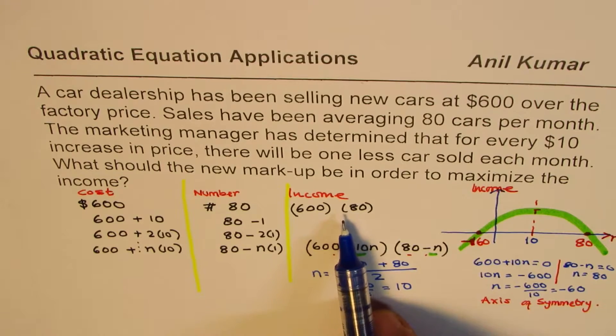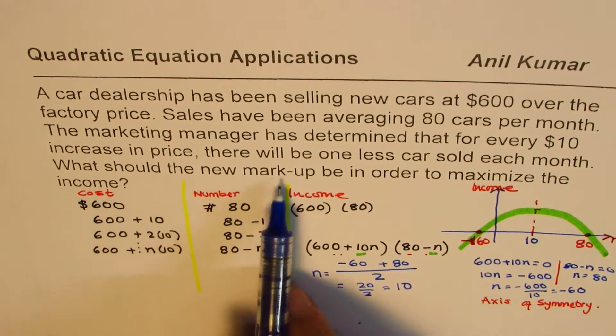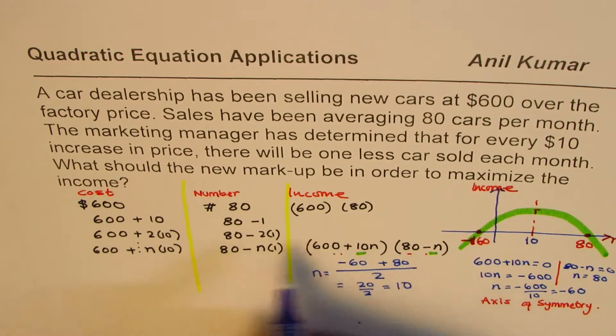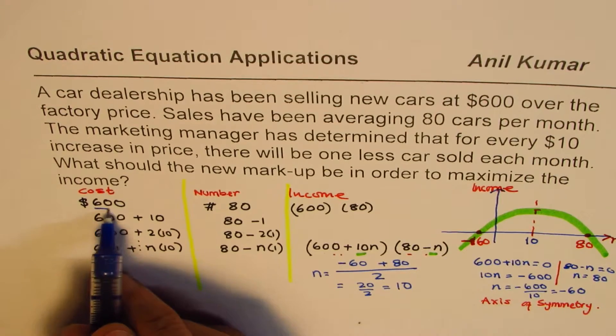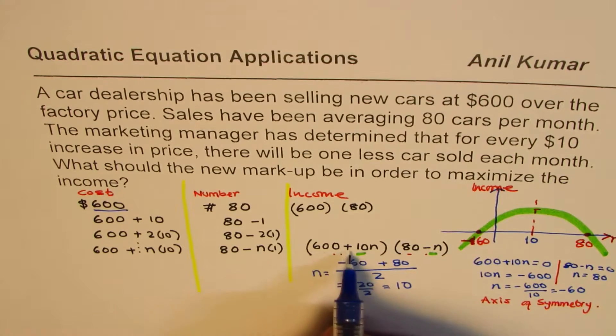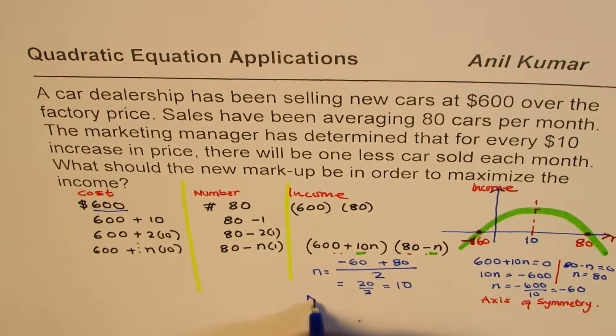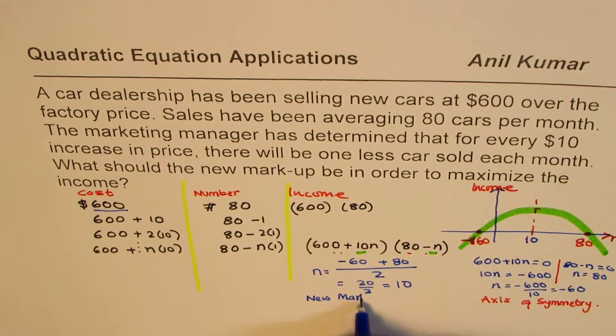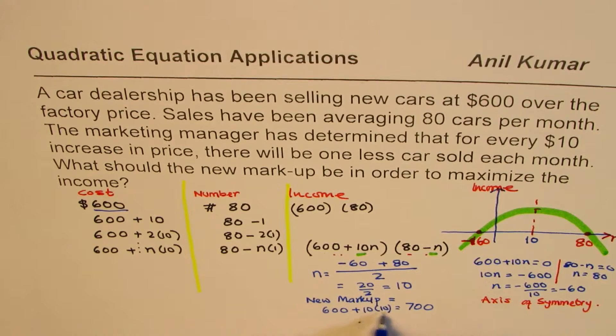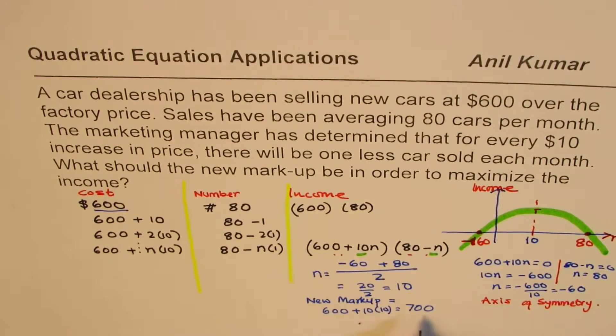So now, if you see, if I place n as 10, I get maximum income. Have we solved the question? Let's look into it. What should the new markup be in order to maximize the income? So this is the markup. Earlier it was 600. The new one should be 600 plus 10N. So new markup should be equals to 600 plus 10 times 10, which is 700. Do you see that? 600 plus 10 times 10 is 100, which is 700 dollars. So that is our answer.